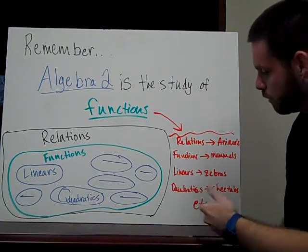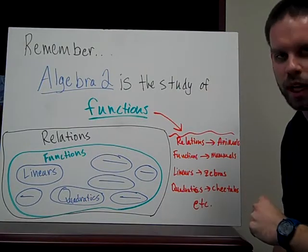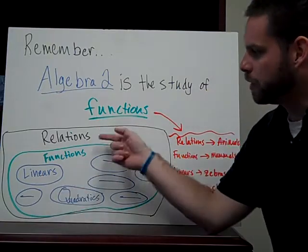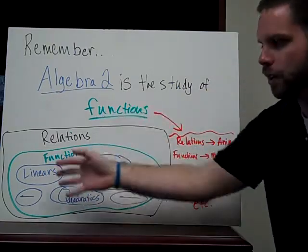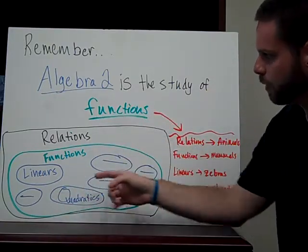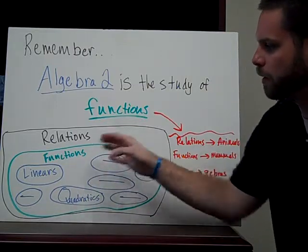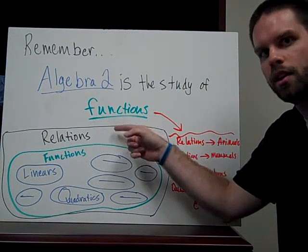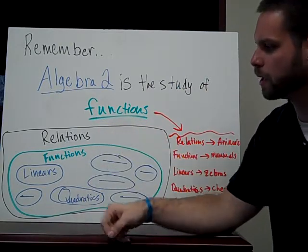So what we're doing in chapter 4 is we're actually learning a new one called quadratics. So here I made a picture of it too. Relations are the big circle. There's bajillions, millions of those. Functions are the same thing. There's a lot of those, but they're a special kind of relations. All functions are relations. Not all relations are functions.